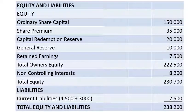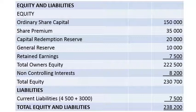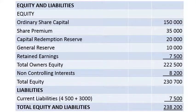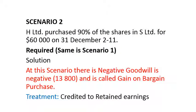In the equity and liabilities section, we take only the equity of the parent. For reserves, we only add the parent's portion for since-acquisition amounts. NCI from the analysis of equity is $8,200. Non-current liabilities are $4,500, and we add S Limited's $3,000 liabilities to H Limited's liabilities. That completes Scenario 1.